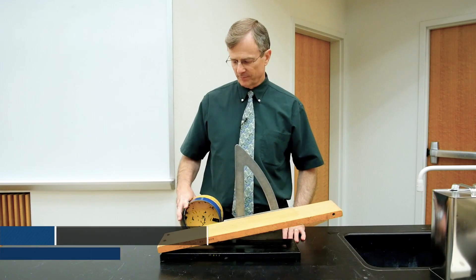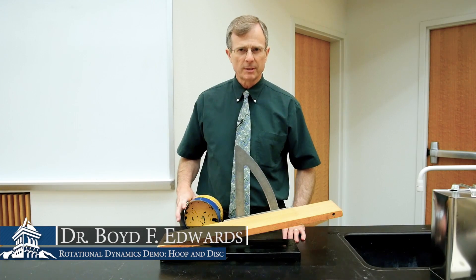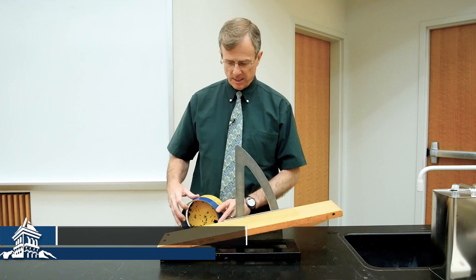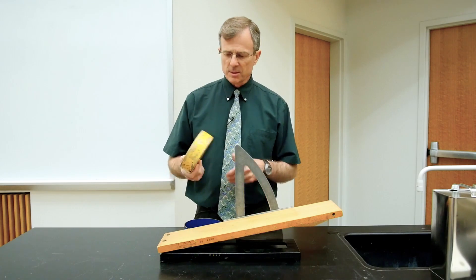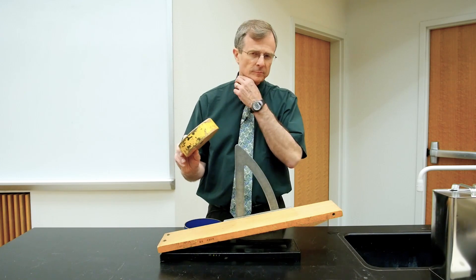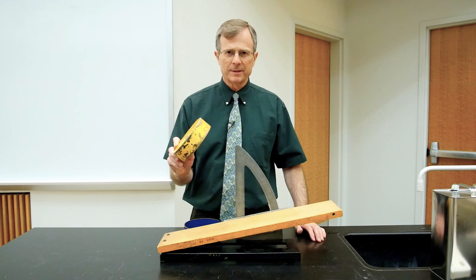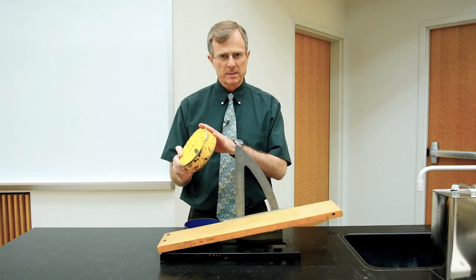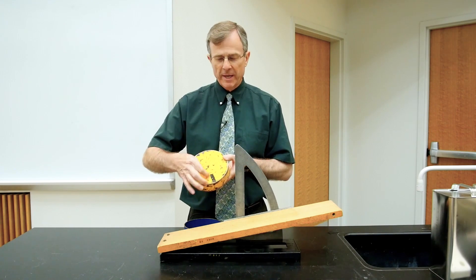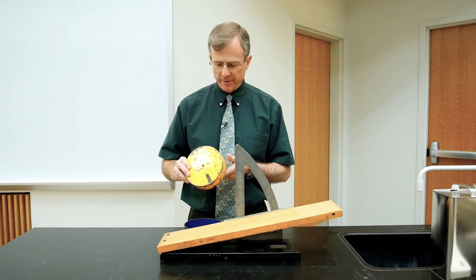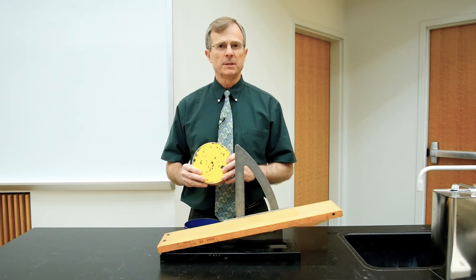I'm going to demonstrate the effect of moment of inertia on a rolling disk. This is a solid disk. It has moment of inertia one-half m, the mass, r, the radius, squared. One-half m r squared for this solid disk.